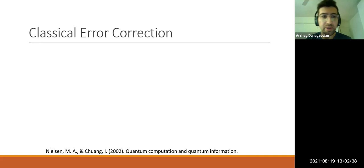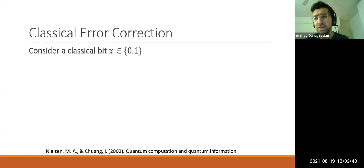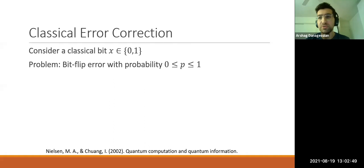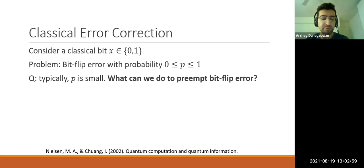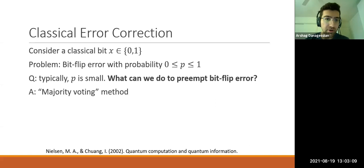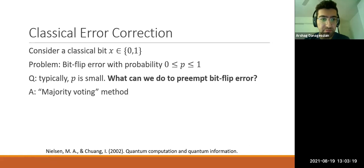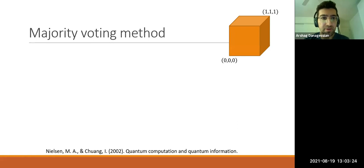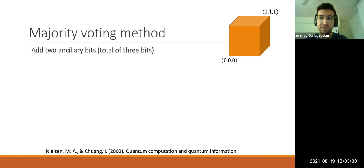I want to first introduce quantum error correction in a very simple way. Let's start with classical error correction. Assume that I have a classical bit which can be either zero or one, and let's say there is going to be some bit flip error with probability p onto this bit. Can we preempt this bit flip error? It turns out the answer is yes, and you can do it through something called the majority voting method. What you do is add two ancillary bits into your initial bit, so now you have three bits instead of one.